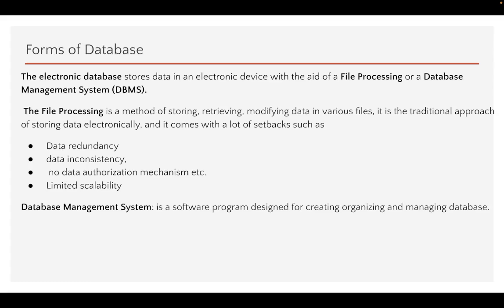The file processing system is a method of storing, retrieving, and modifying data in various files. It is a traditional approach of storing data electronically, but it comes with a lot of setbacks. One key setback is data redundancy — the same data can be stored across multiple different files, making the data very redundant.